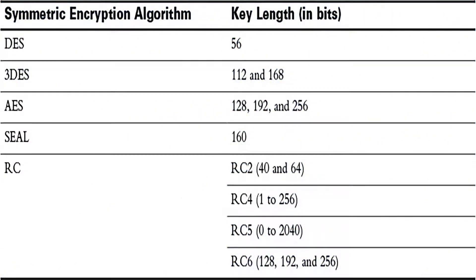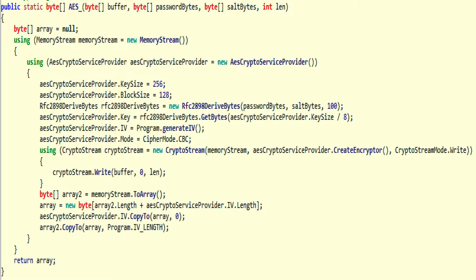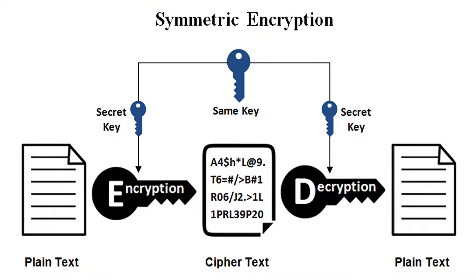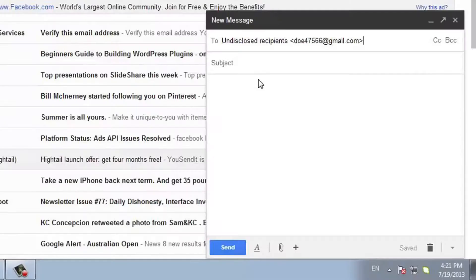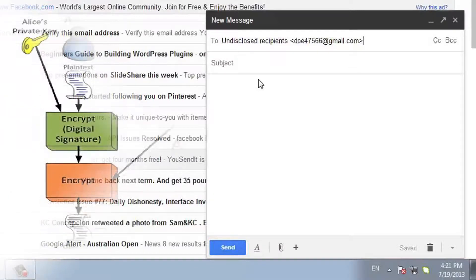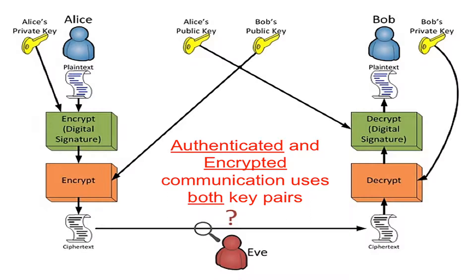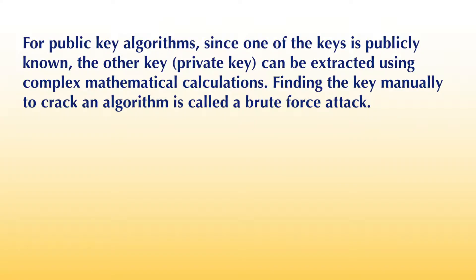Next, let us discuss key length and encryption strength. Cracking an encryption algorithm is primarily finding the key to access the encrypted data in plain text. For symmetric algorithms, cracking the algorithm generally means trying to determine the key used to encrypt the text. For a public key algorithm, it means obtaining the shared secret information between two recipients. One method of cracking a symmetric algorithm is to try every key within the whole algorithm until the right key is found. For public key algorithms, since one of the keys is publicly known, the private key can be extracted using complex mathematical calculations. Finding the key manually to crack an algorithm is called a brute force attack.